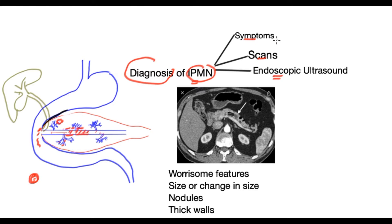The great majority of patients will have no symptoms at all, and this condition is picked up as a tiny cyst in the pancreas in one corner, usually of no consequence. However, patients may have symptoms such as abdominal pain, vomiting, and nausea.